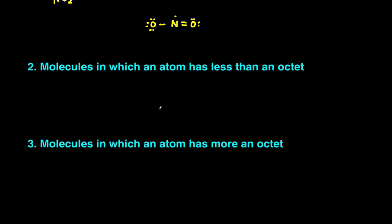The second category: there are atoms which tend to have less than an octet. And the most common atoms are boron, which tends to have six electrons around it instead of eight, and then beryllium, which tends to have four electrons around it instead of eight.